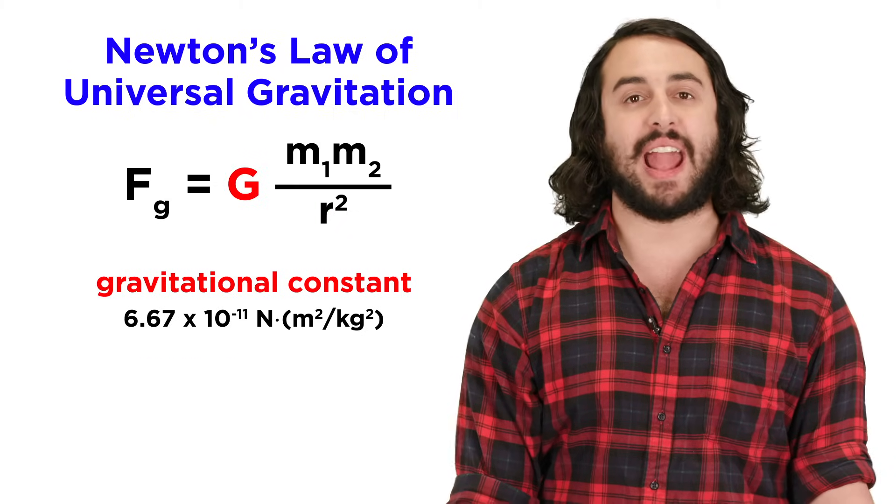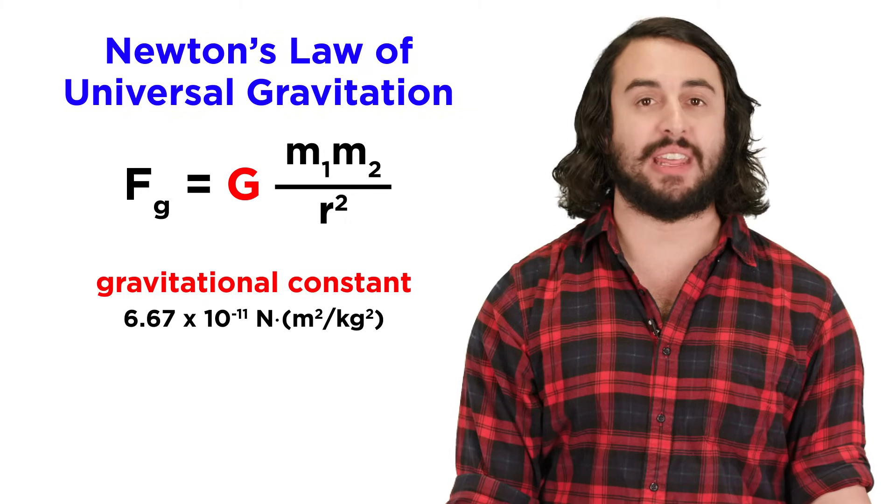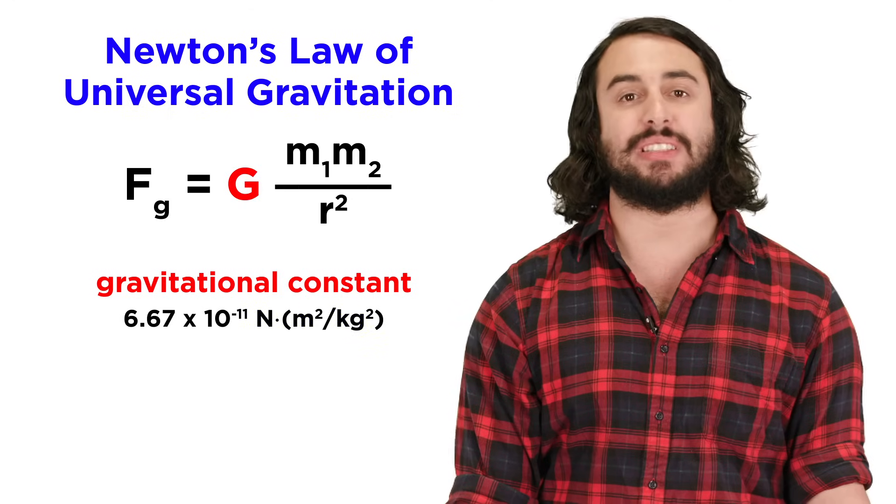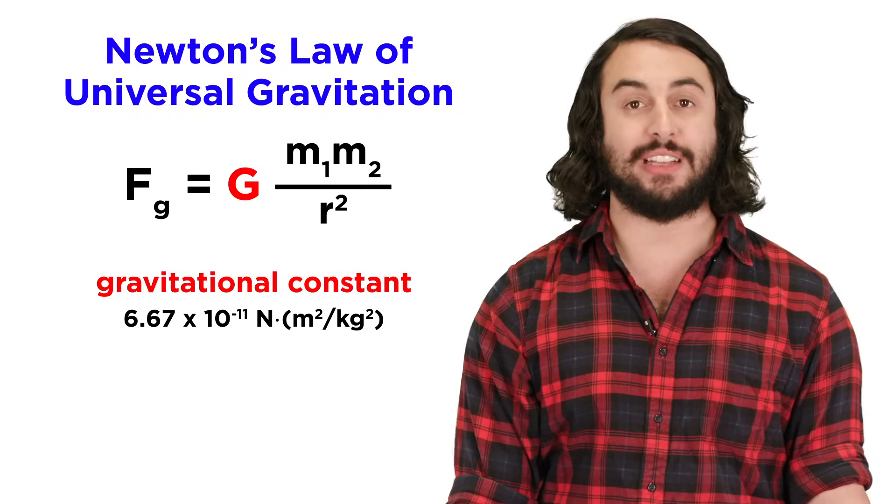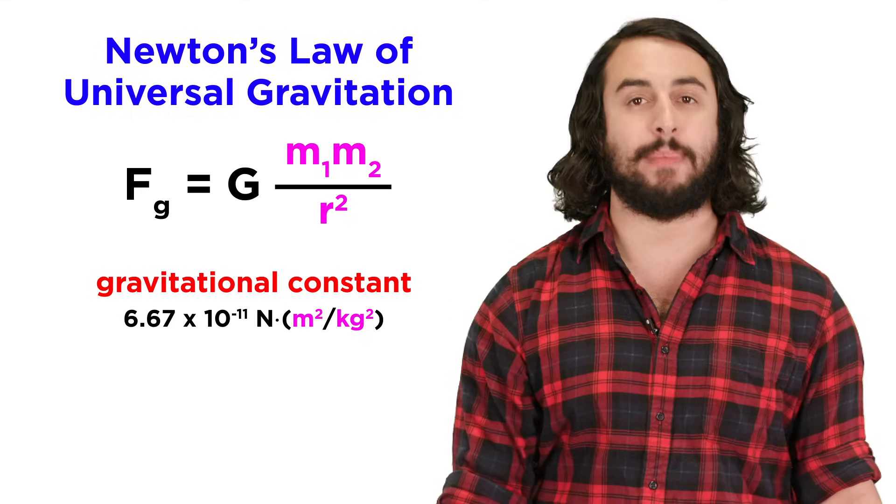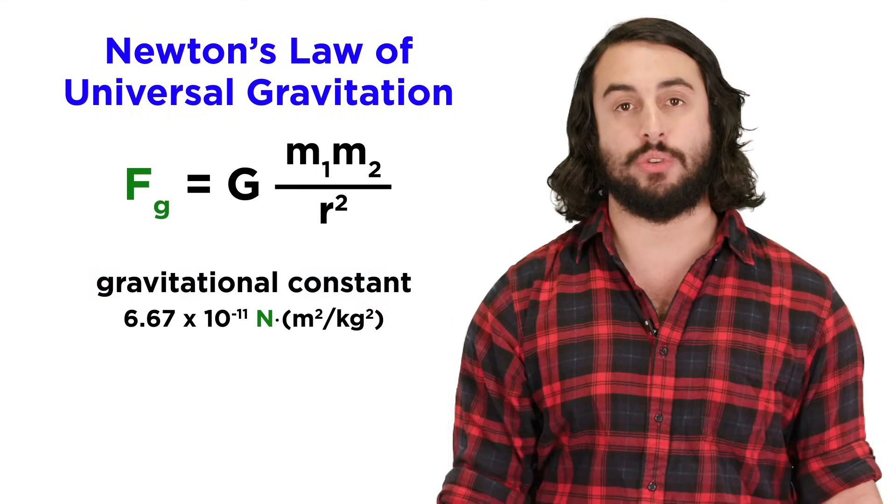This constant, like any other constant, simply exists so that a natural phenomenon like gravity can be expressed in our own arbitrary man-made units, and it is equal to 6.67 times 10 to the negative 11 Newton meters squared over kilograms squared. These are the units that will cancel out the units on the masses and radius so as to give a value for force in Newtons.